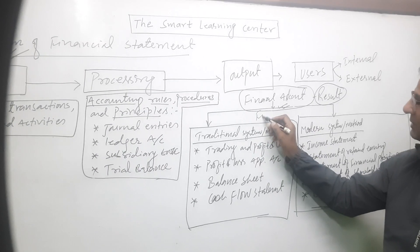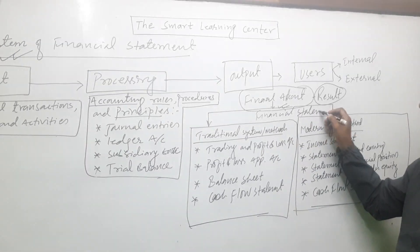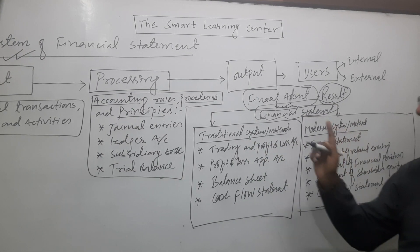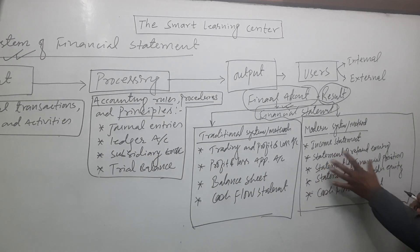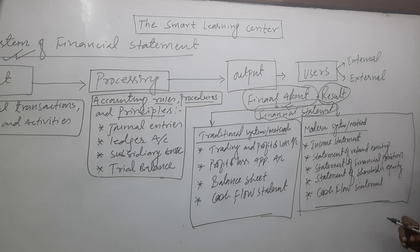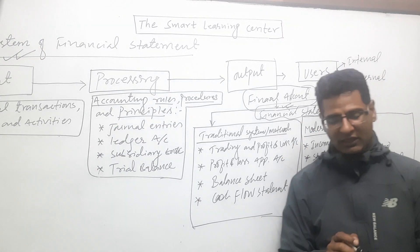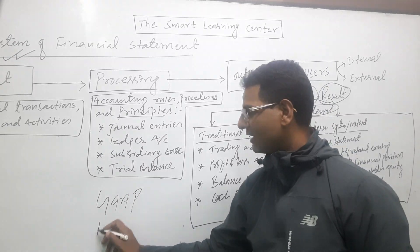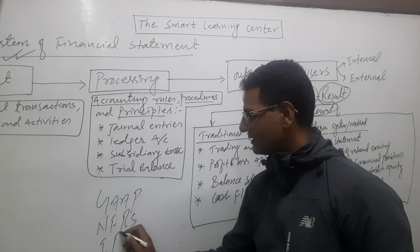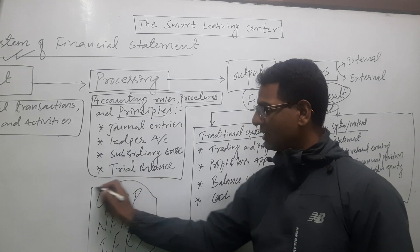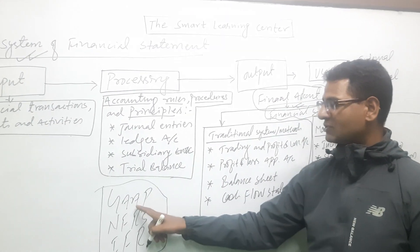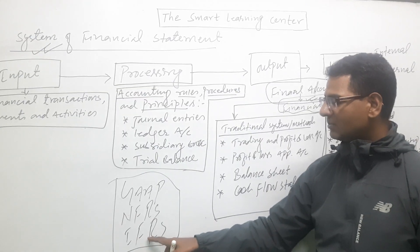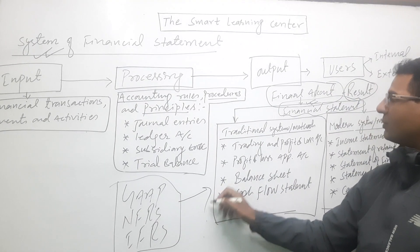I will basically study the final account under the traditional system and the modern system, and the differences between them. The output is the final account, the financial statement. The financial statement is made by either the traditional system or the modern system, following accounting procedures such as GAAP — Generally Accepted Accounting Principles — NFRS (Nepal Financial Reporting Standards), and IFRS (International Financial Reporting Standards).